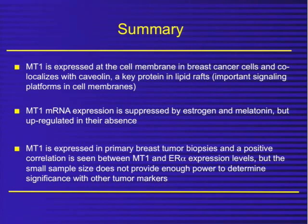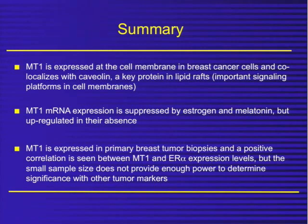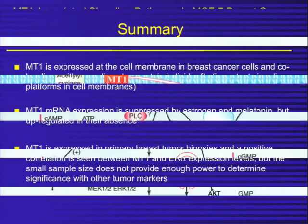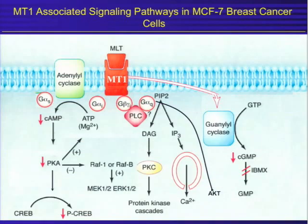In some data I've just recently published, the MT1 melatonin receptor is expressed in primary tumor biopsies and has a positive correlation with estrogen receptor alpha expression. However, we did a small cohort of only 50 tumors, and the small sample size does not provide enough statistical power to determine significance with other important tumor markers, so we are working to expand those numbers. We know that melatonin, through the MT1 receptor, has inhibitory effects on human breast cancer.